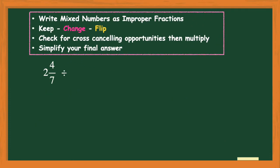Let's pull up our four easy steps again. This time we have 2 and 4/7 divided by 3/7. Since this is a practice video, feel free to pause and solve the problem on your own, then come back to check your answer. To start, I need to change the mixed number 2 and 4/7 into an improper fraction: 7 times 2 is 14, plus 4 is 18, so the improper fraction is 18/7. Bring down the division and bring down 3/7.